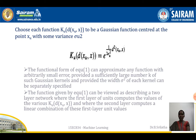The functional form of the previous equation can approximate any function with arbitrarily small error, provided a sufficiently large number of k Gaussian kernels, where the variance sigma squared of each kernel can be separately specified. Equation 1 can also be viewed as describing a two-layer network where the first layer computes the values of the various products k_u into distance, and the second layer computes a linear combination of these first layer outputs.